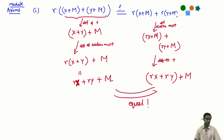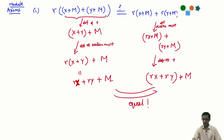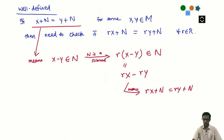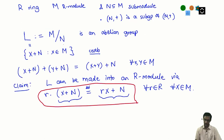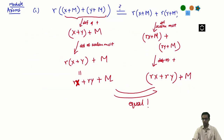All the other axioms are similar, so I will leave that for you to check. What we have managed to do is show that the quotient group M/N is in fact more than just a group — it is actually an R-module.